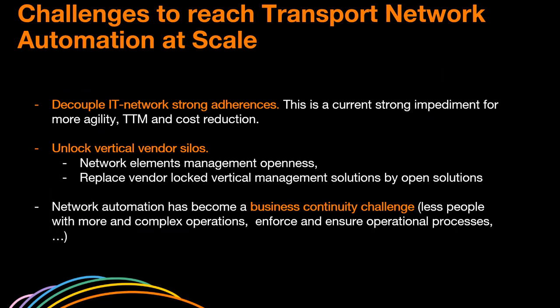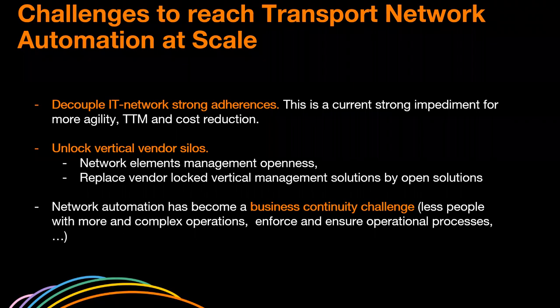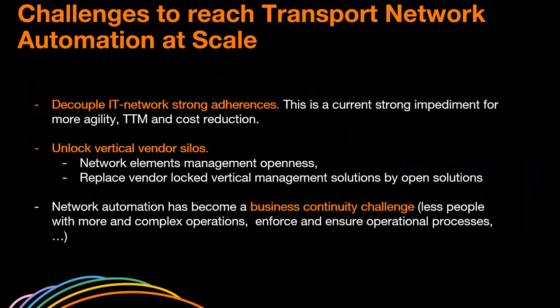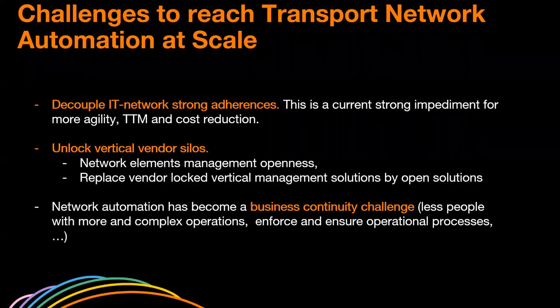We are going to present what we did using Orange to address transport network automation. We had several challenges to face when automating our transport network infrastructures at scale. The first, and maybe one of the most important, is to decouple the legacy IT application from the network, because currently we have strong adherences and the network interfaces are hard-coded in our IT. This is a strong impediment to agility, time-to-market, and effective cost reduction.